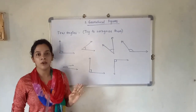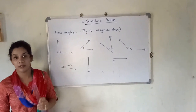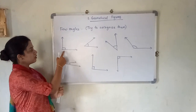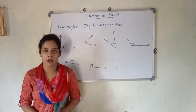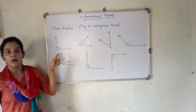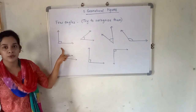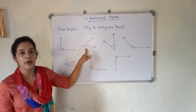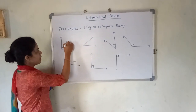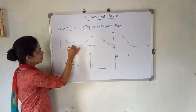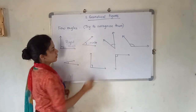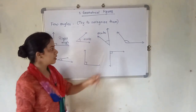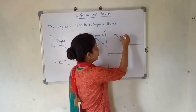Now we are going to recognize angles. Can you tell me which angle this is? You can see the square symbol — it is equal to 90 degrees, so this is a right angle. Can you tell me this one? This is an example of an acute angle. Can you tell me this one? This is also an acute angle. Can you tell me this one? You can see the wider opening — this is an obtuse angle.